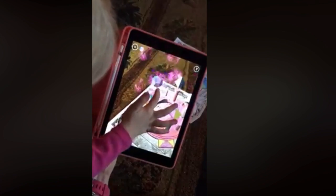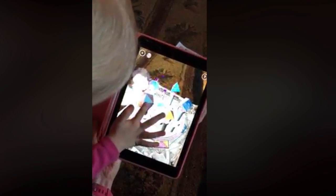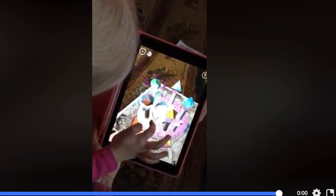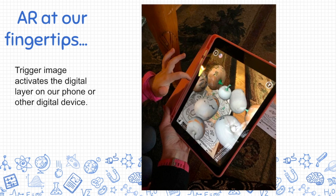In this video, my niece is utilizing what we call Quiver Vision. We downloaded a page, printed it out, and were able to color it. When we scanned it using the Quiver Vision app, the page came to life and we were easily able to see her work come to life. The same is true with the pumpkin page shown here — when we scanned it, her pumpkins came to life and she was able to touch the different pumpkins and they bounced around and did fun things.